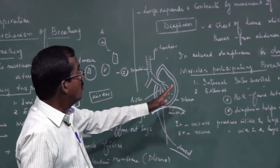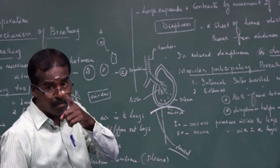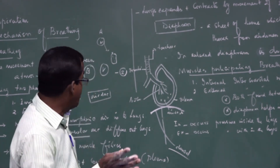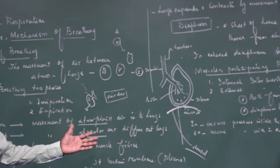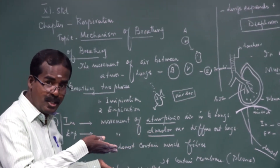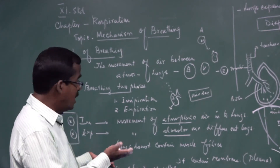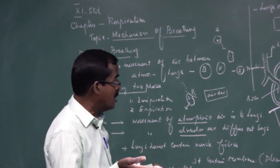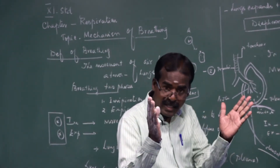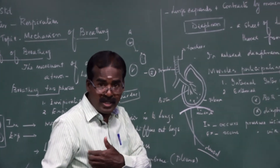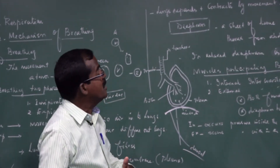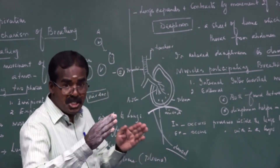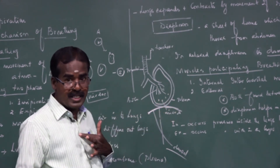What are the muscles participating in breathing? Very important. Inspiration is initiated by contraction of the diaphragm and intercostal muscles. The diaphragm helps in pressure gradient — it can increase or decrease pressure. Lungs expand and contract by movement of ribs and diaphragm, which separates thorax and abdomen.